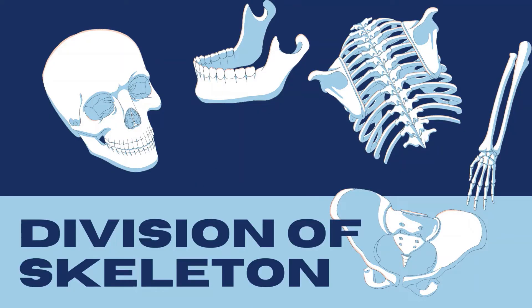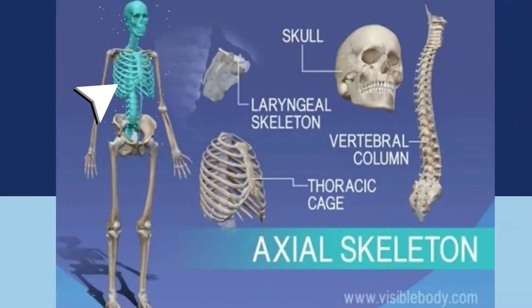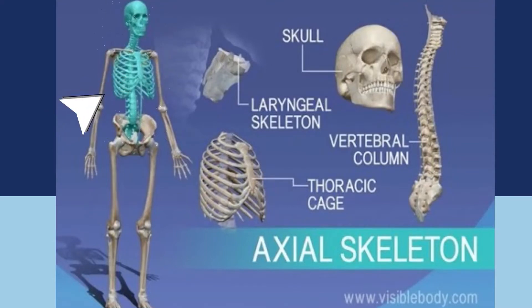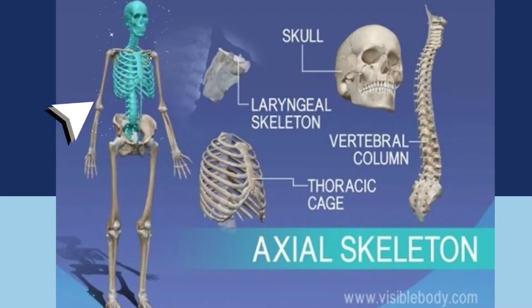Alright, the divisions of the skeleton are: First, the axial skeleton, which starts with the skull, the laryngeal skeleton, the vertebral column at the back, and the thoracic cage. This is also called the upper skeleton, or the axial skeleton.